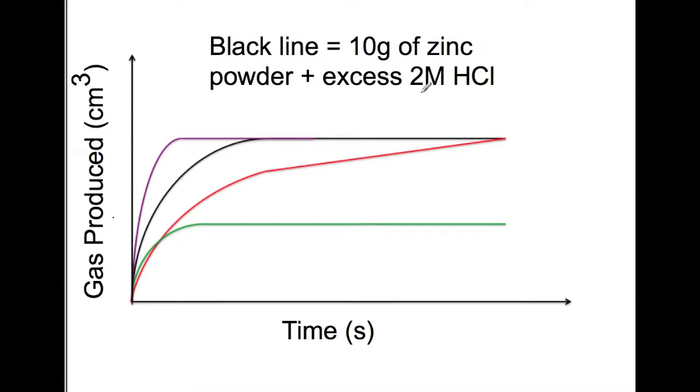This first example is a reaction between zinc and hydrochloric acid. We've followed the reaction with time and taken a measurement of gas produced to produce this graph here. So the black line is the basic graph that we're comparing to. This is 10 grams of zinc powder with excess 2M HCl. This means that all of the zinc will react with the hydrochloric acid that we have there.